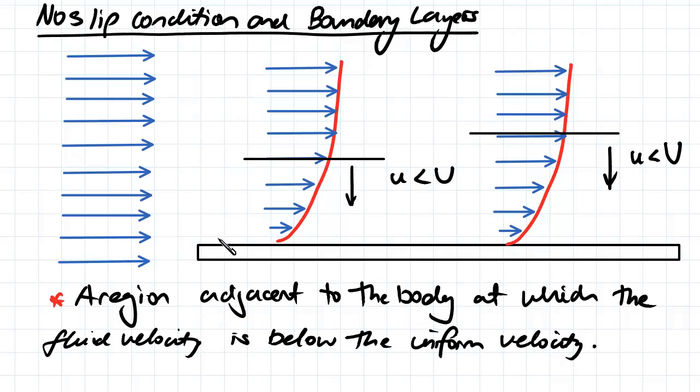So essentially what happens is around this body here, we're going to have some region here where inside of this region we're going to have velocities that are going to be lower than the velocity of the uniform flow and they're going to be zero at this layer here.